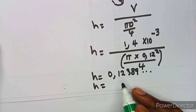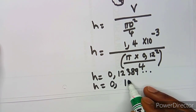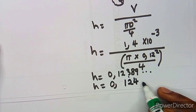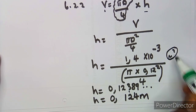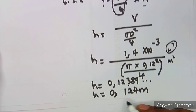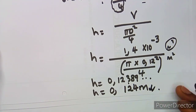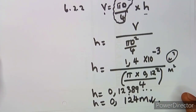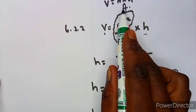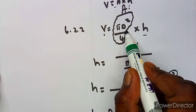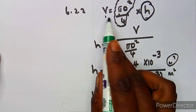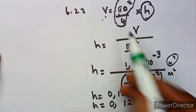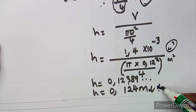Calculating gives h ≈ 0.12389 m, which rounds to 0.124 m. The units work out to meters because volume was in cubic meters and area in square meters. So the stroke length is approximately 0.124 meters.